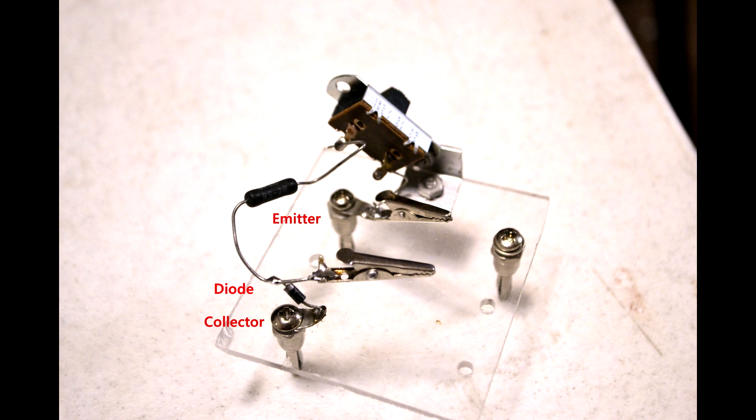A momentary switch is provided to discharge the capacitor. Use this to discharge the capacitor before removing it from the test jig.